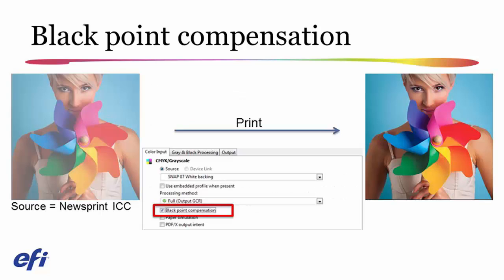If we look at a kind of unusual example here, the image on the left has a source ICC space defining it as newsprint. So this is a very washed out appearance, such as we might see in the newspaper. If I print this with black point compensation enabled on the Fiery DFE, I'm going to get a fantastic reproduction as you see on the right. I'm going to map that washed out shadow point from the newsprint profile into the very dark, dense, detailed shadow point that I have on the output profile I've created for my Fiery.